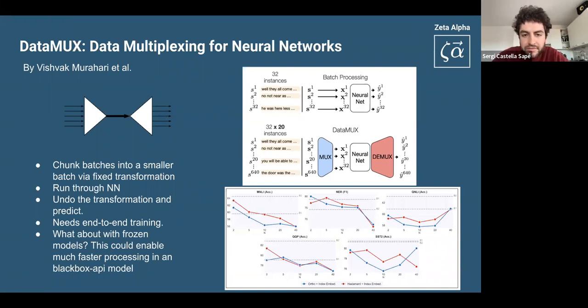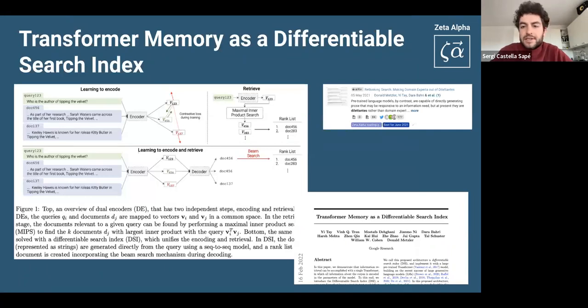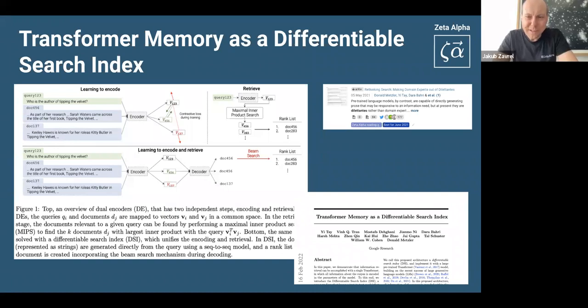But if I understand it correctly, you do actually need access to the numerical input to the network. You cannot do this when your API accepts batches of texts, for example, or images. Correct. You need numerical input access to this. And like I said, in this paper, they train the whole system end to end. But I think that there's some potential to see how you can adapt this to other situations. So definitely something to keep an eye on for the work.